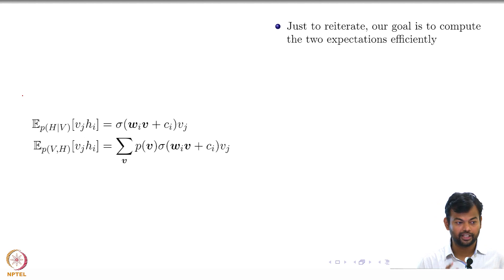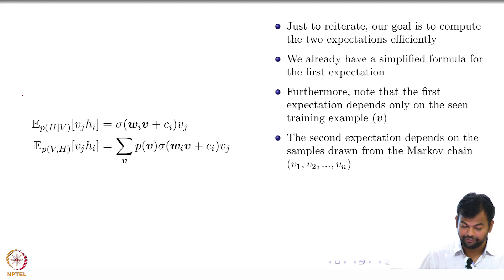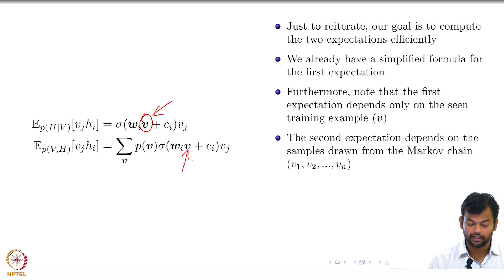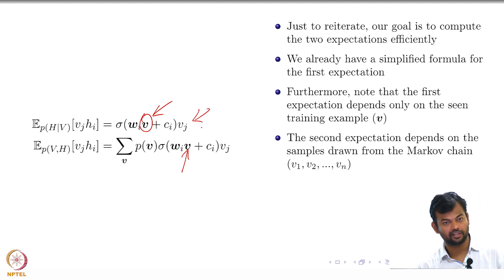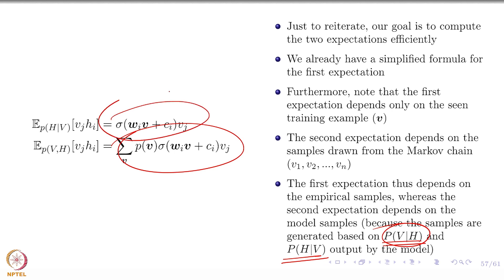Our goal is to compute these two expectations. We already have a simplified formula for them. The first expectation does not have any summation and only depends on the visible variables — the training data. The second expectation depends on samples drawn from the Gibbs chain, not from the training data. So the first expectation is about the training data — the empirical samples — and the second expectation is about the model samples, drawn based on the current parameter configuration of the model.